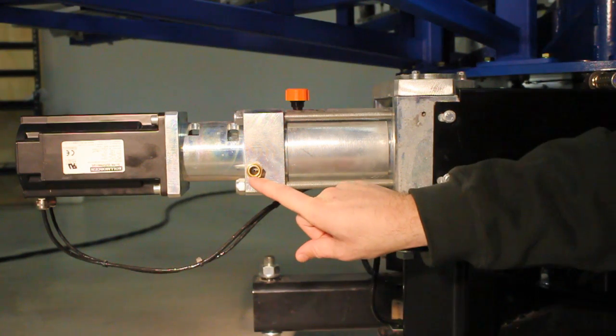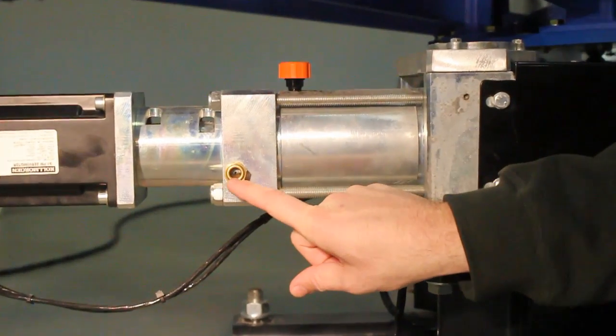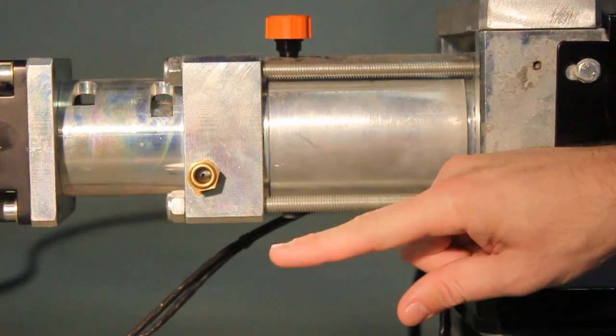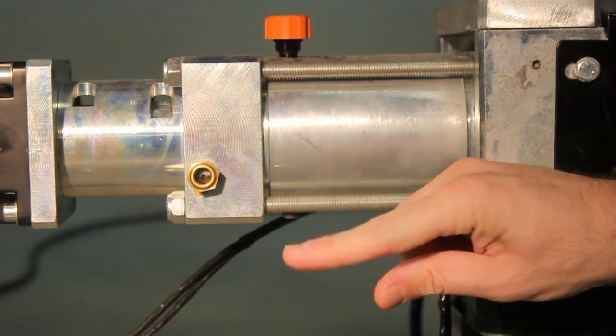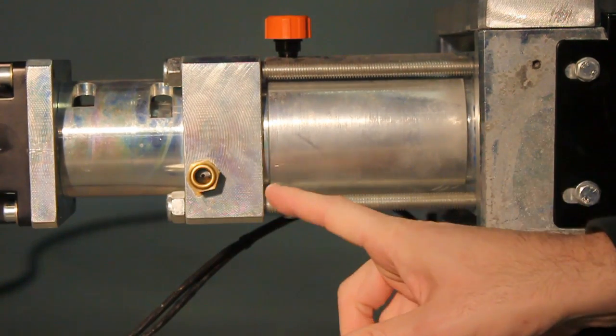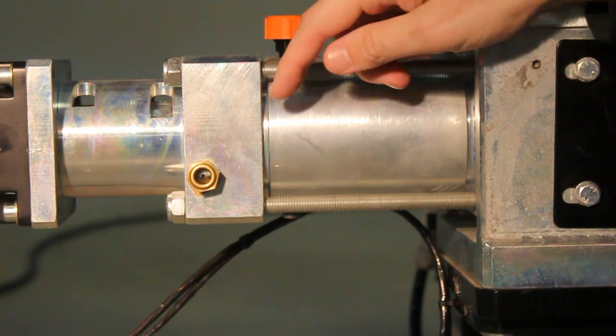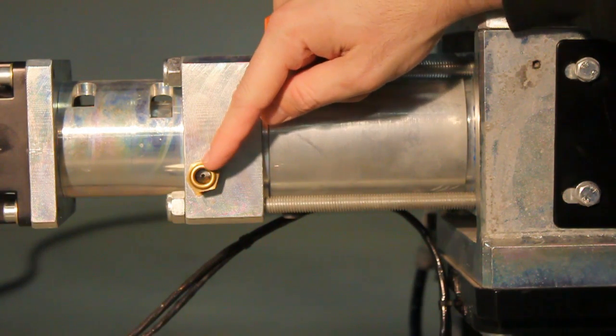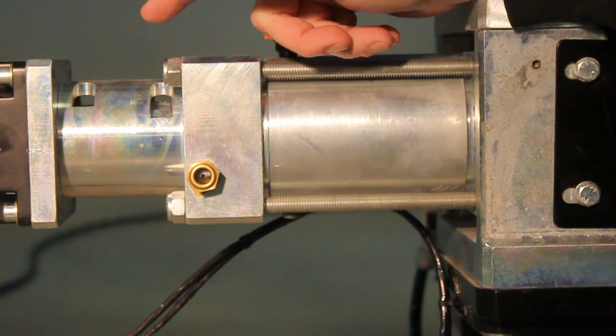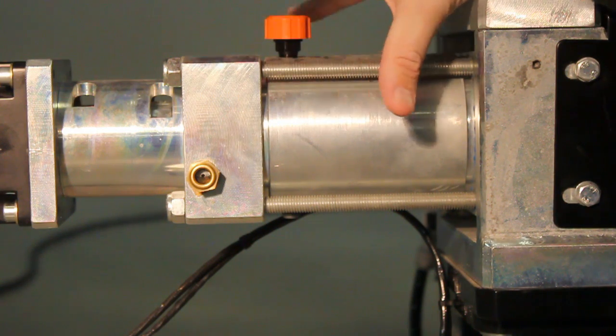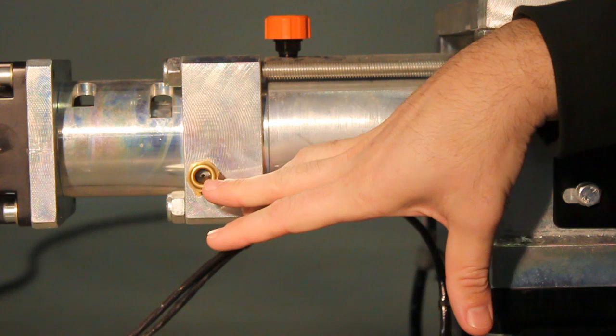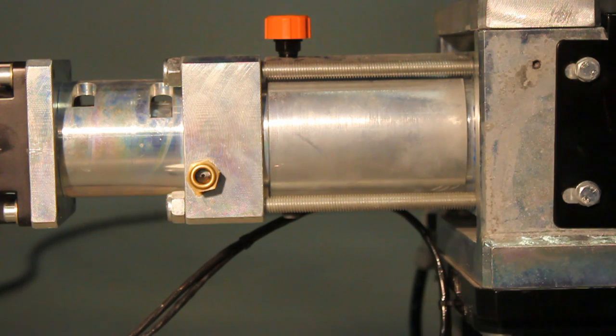You'll notice this sight glass. You can see the oil level. What's critical here is since the ball nut is rotating via the motor and the coupling, the oil will sling around inside this housing. So when you want to check the oil level, you want to make sure that it sits, say, overnight. All the oil that's been slung will settle and you can easily check the oil level.